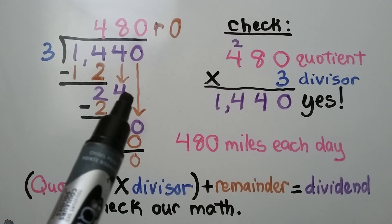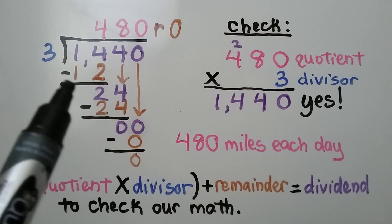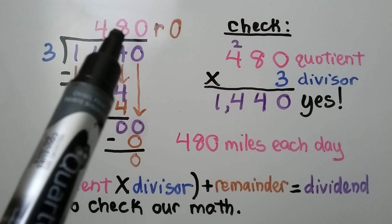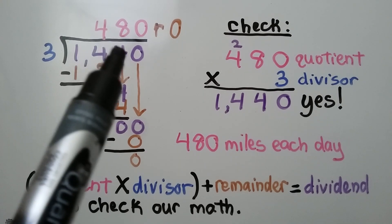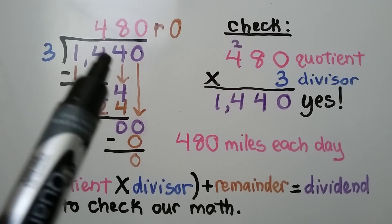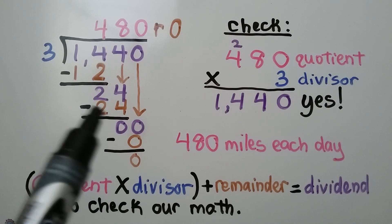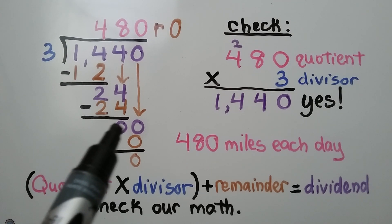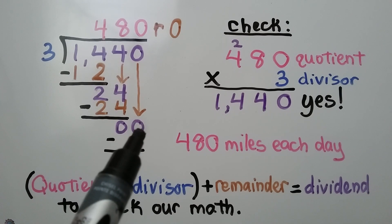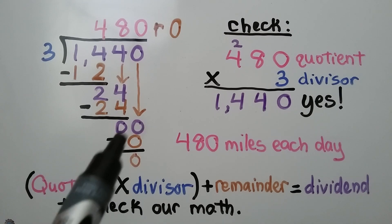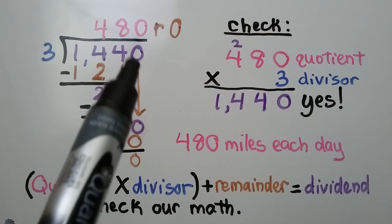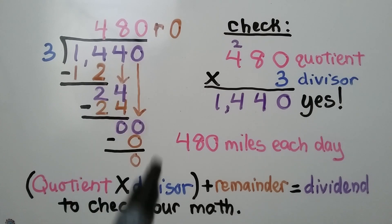Now it's the 4's turn to drop down. Can 3 fit into 24? Yes, because 3 times 8 is 24. We put an 8 above the tens place, and 3 times 8 is 24, so we subtract 24 and get 0. Now the 0 drops down. Can 3 fit into 0? No — 0 times. So a 0 goes in the quotient above the ones place.